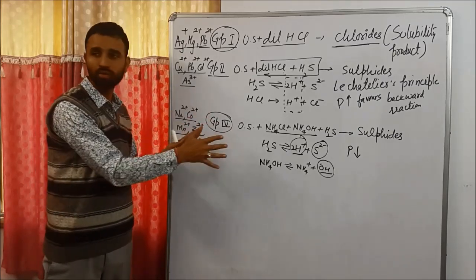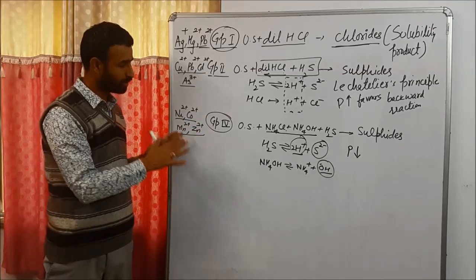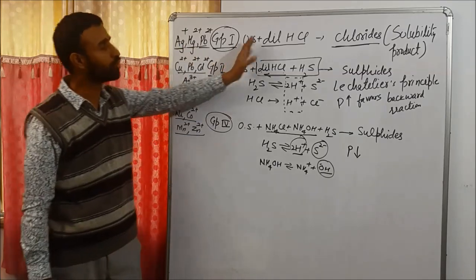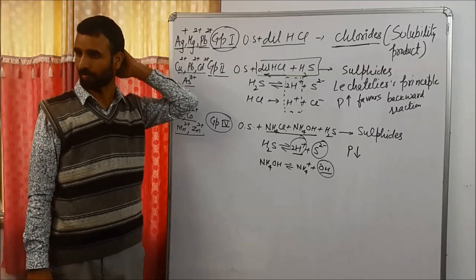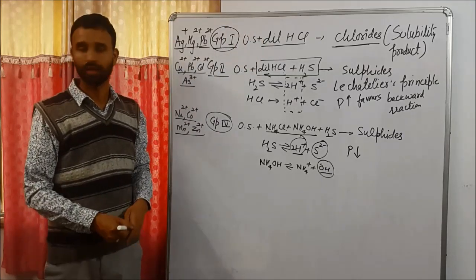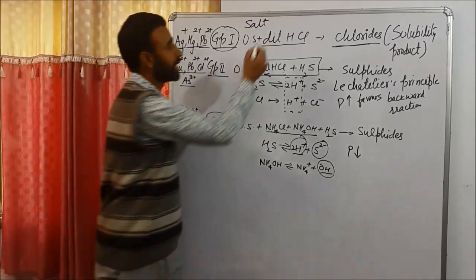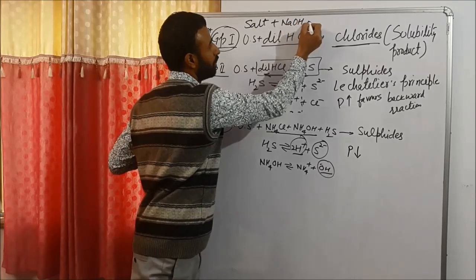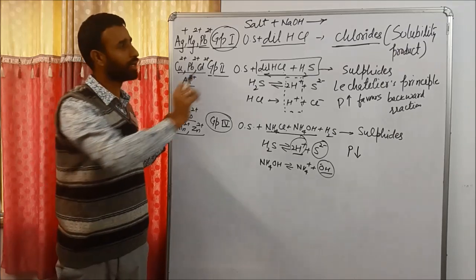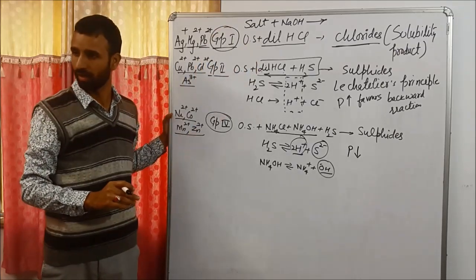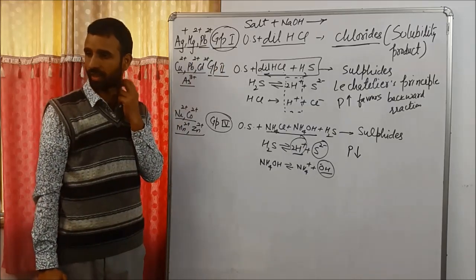So it is all related to ionic product and solubility product. They can ask you further questions on this. In case of group 0, what do you do? We add NaOH and slightly warm it. If we get a pungent smell, that is of ammonia, meaning NH₄⁺ may be present.